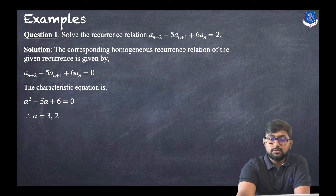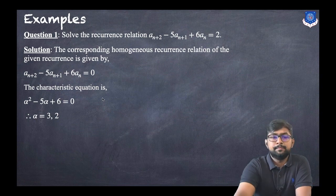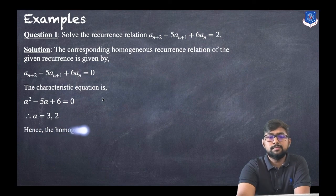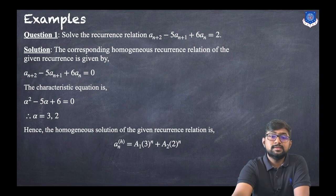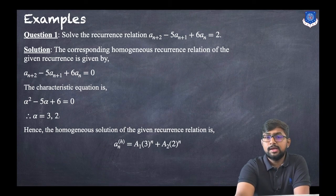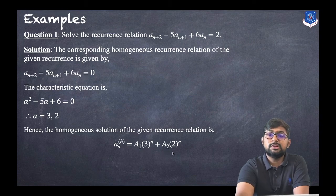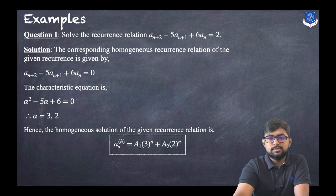The roots are 3 and 2. Since the roots are distinct, the homogeneous solution is: a(n)_h = a1·3^n + a2·2^n, where α1 = 3 and α2 = 2. Now we proceed for the particular solution.